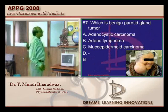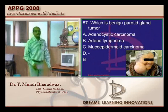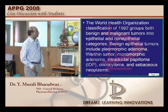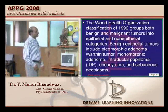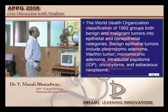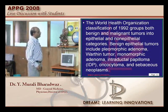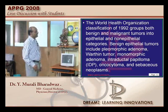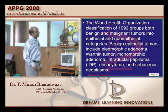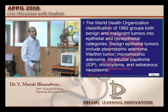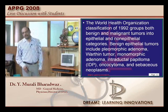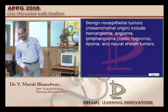Which is a benign parotid gland tumour? Pleomorphic adenoma, Warthin's tumour, monomorphic adenoma, intraductal papilloma, and oncocytoma — they are all basically called the benign epithelial tumours of the parotid.